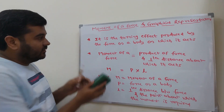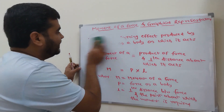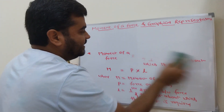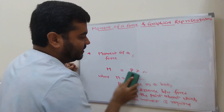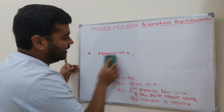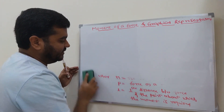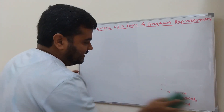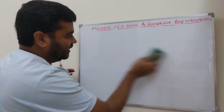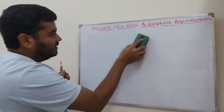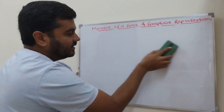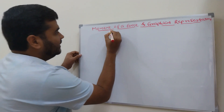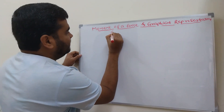Next, we will go for graphical representation. Because if you see the graphical representation, we can easily recognize and clarify what the moment is. That is, graphical representation of moment.